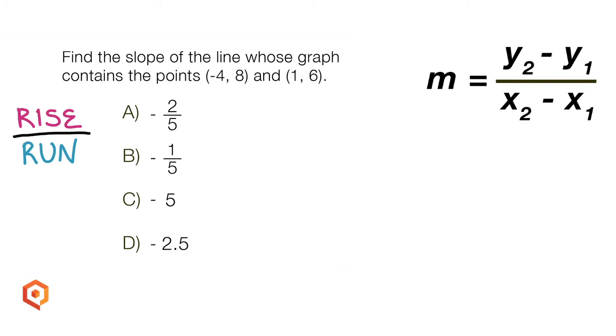Labeling the points before substituting the values into the formula is a really good idea. For the sake of originality, let's call negative 4, 8, x sub 1, y sub 1, and 1, 6, x sub 2, y sub 2.